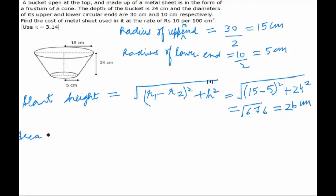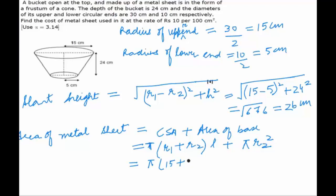Now we say that the area of the metal sheet is equal to curved surface area plus surface area of the base. The curved surface area is given by pi R1 plus R2 into L, and area of the base will be pi R2 square. Substituting the values to get pi 15 plus 5 into 26. So on solving this we get 545 pi cm square.